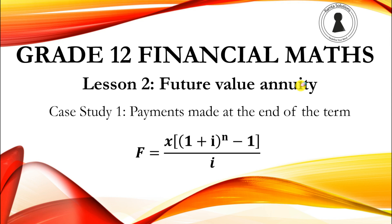Hello guys, welcome to Ramta Solutions. Welcome to your lesson on Grade 12 Financial Maths. Today in our second lesson we are introducing future value annuities. When we talk of annuities we're basically talking of payments made at regular intervals. You make that payment at a regular time — if you're paying per month it's per month, if it's per quarter it's per quarter. When you're paying like that, we call that an annuity.